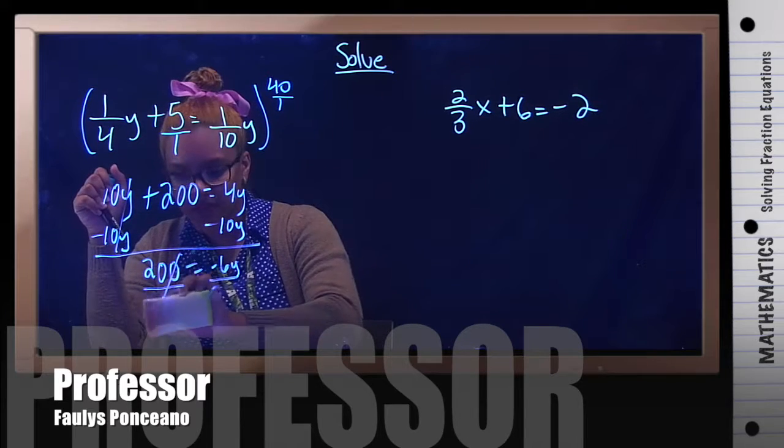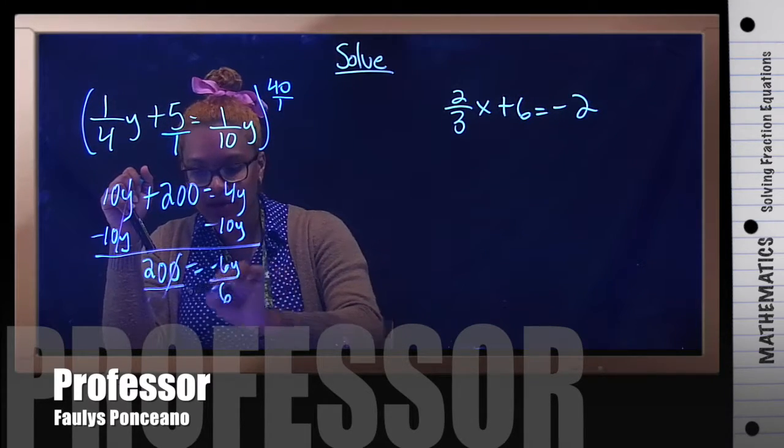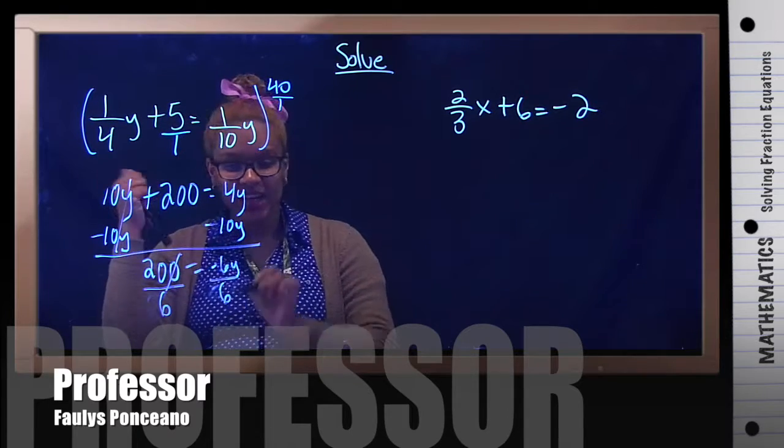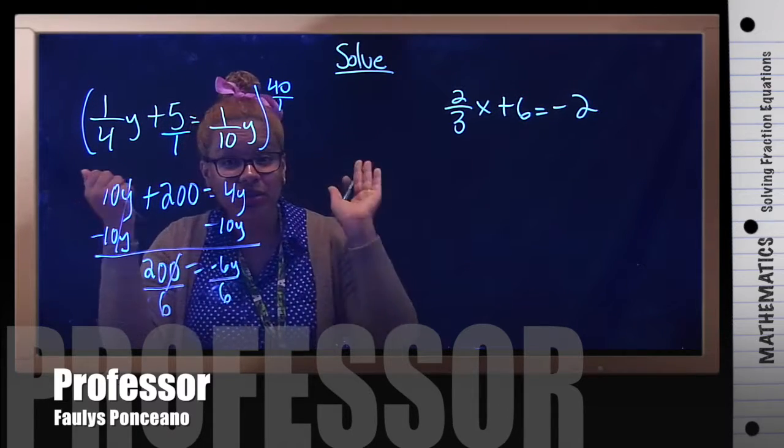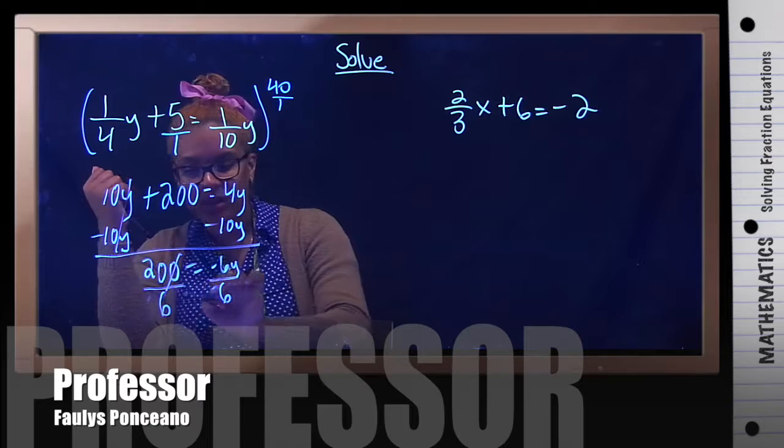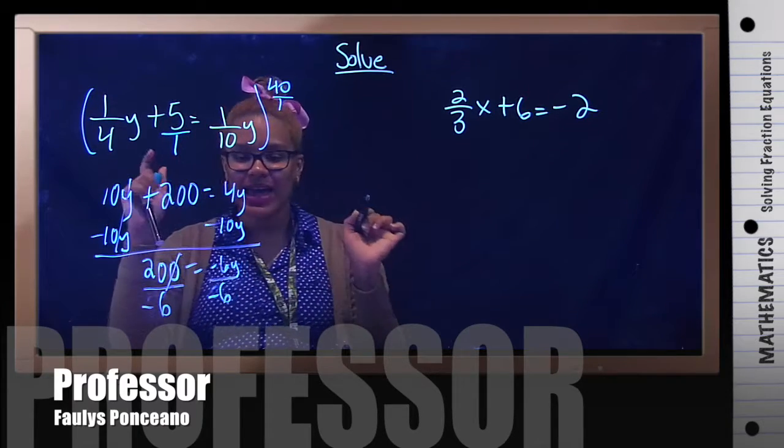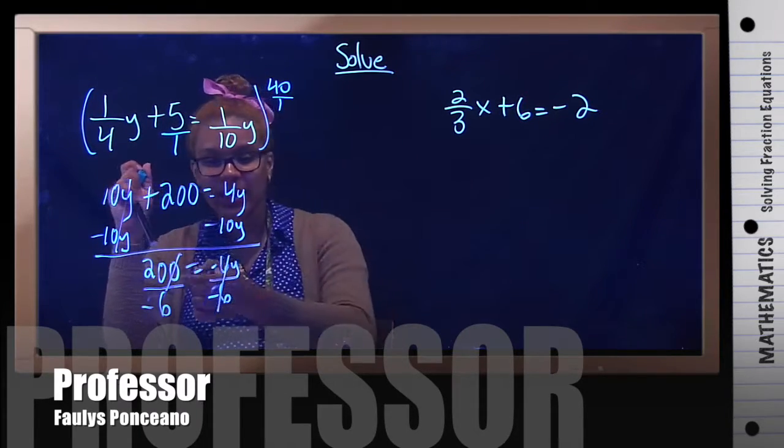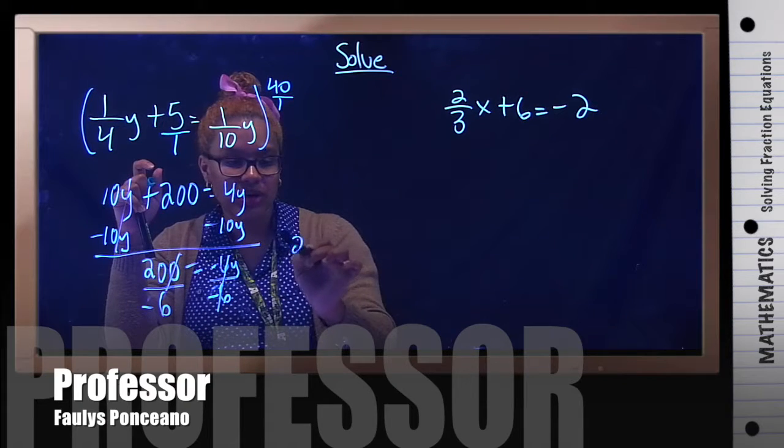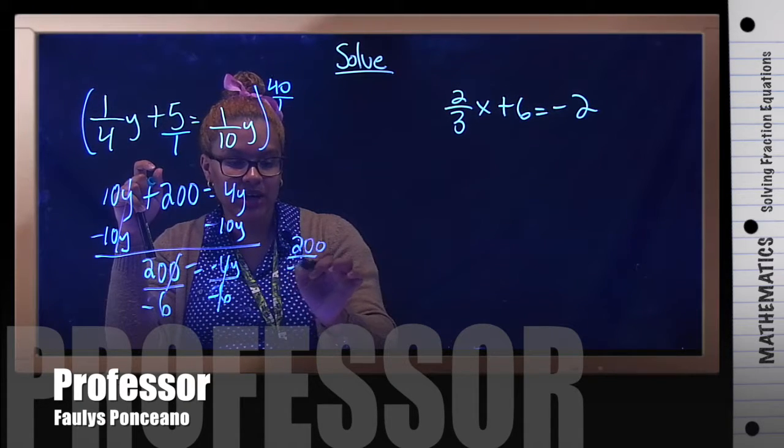I wish you would be saying, wait a minute, why is she dividing by 200? She should be dividing by 6. Because we need to divide by the number next to the variable. So by negative 6. Excellent. That cancels.